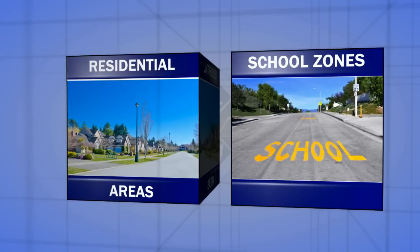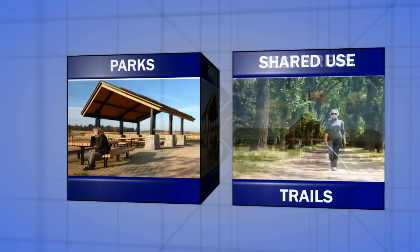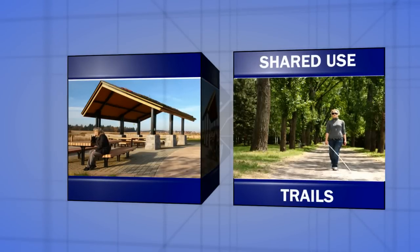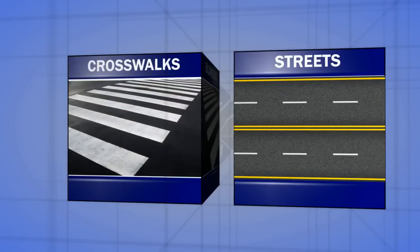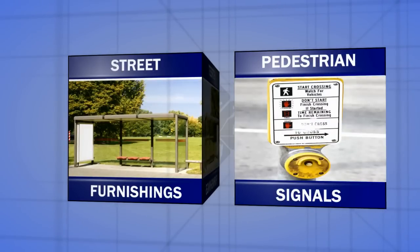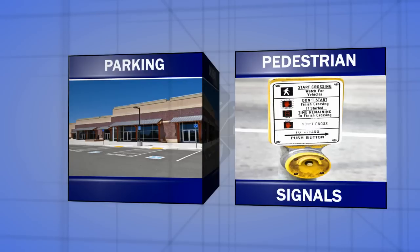Other places to place at the top of your list include rest areas, parks, and shared-use trails. The public right-of-way system includes sidewalks, streets, crosswalks, curb ramps, street furnishings, pedestrian signals, parking, and other components of public rights-of-way.